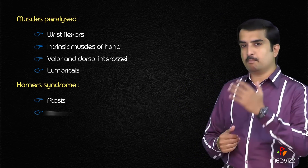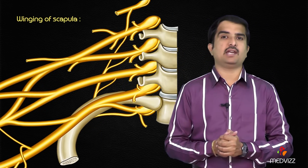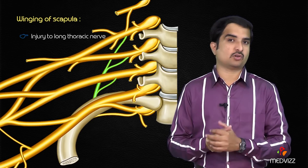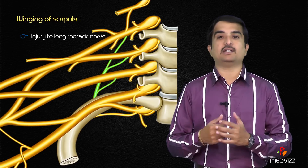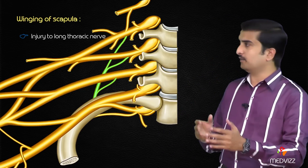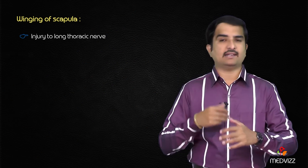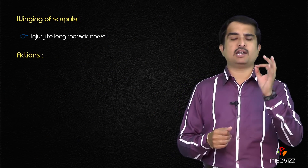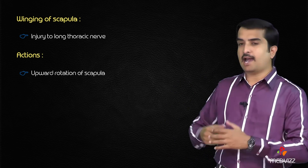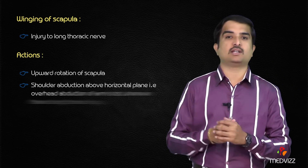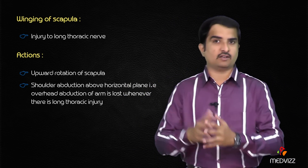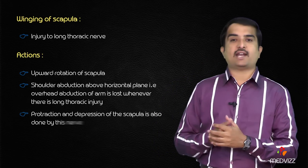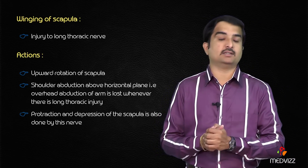Winging of the scapula is mainly due to injury to the long thoracic nerve, also called the nerve to the serratus anterior. The serratus anterior is innervated by the long thoracic nerve, formed by the ventral rami of C5, C6, and C7. Its actions include upward rotation of the scapula, overhead abduction of the arm, and protraction and depression of the scapula.